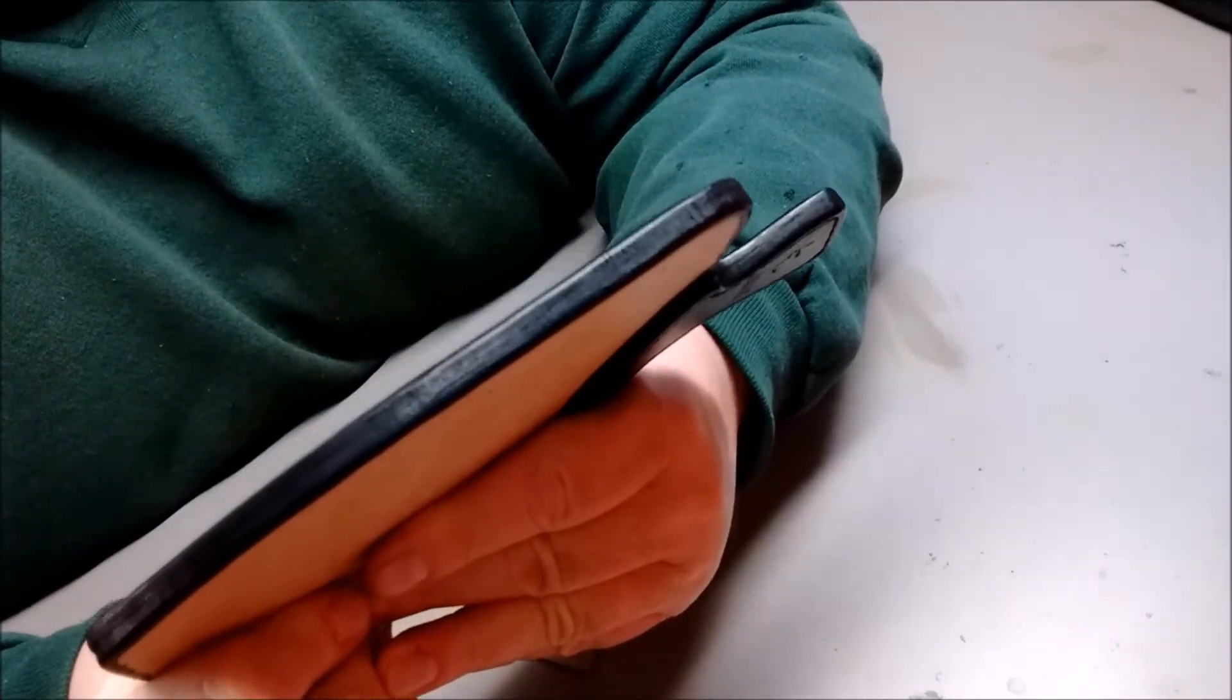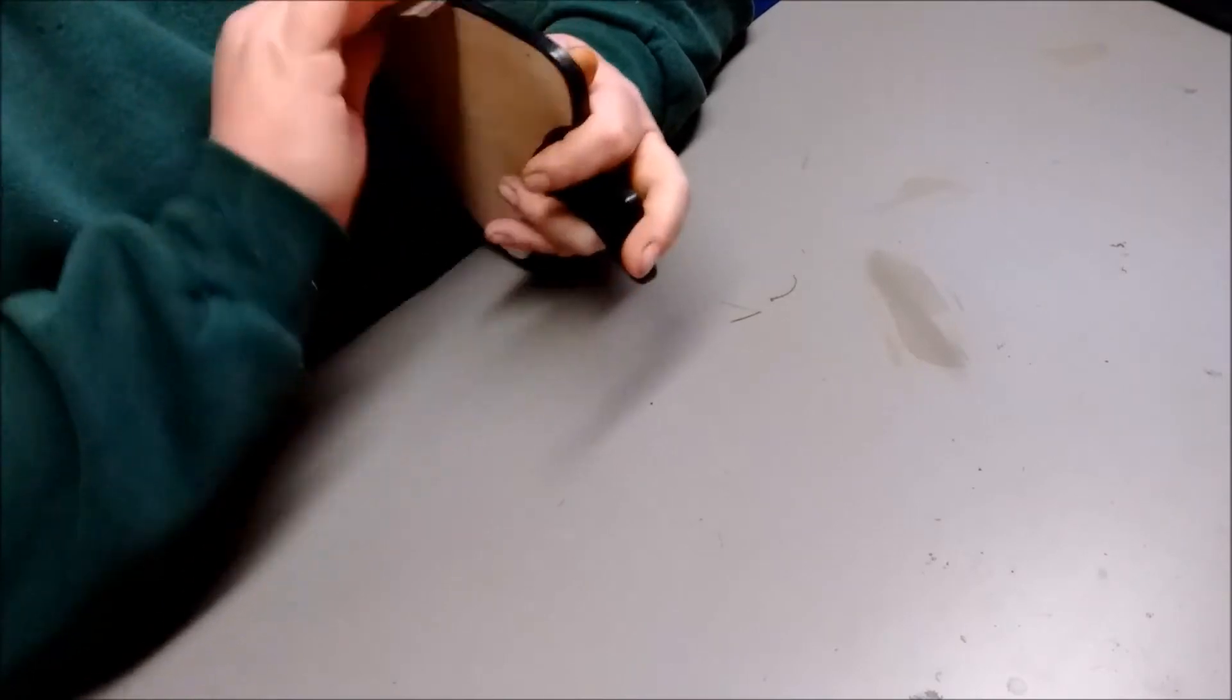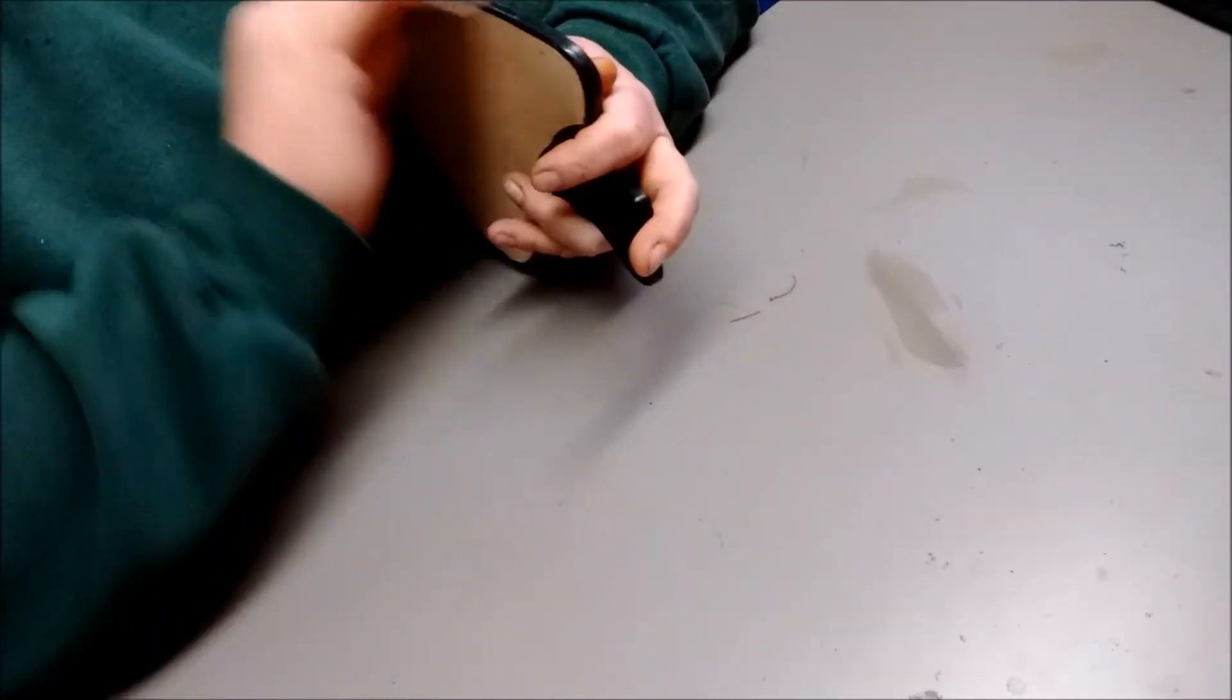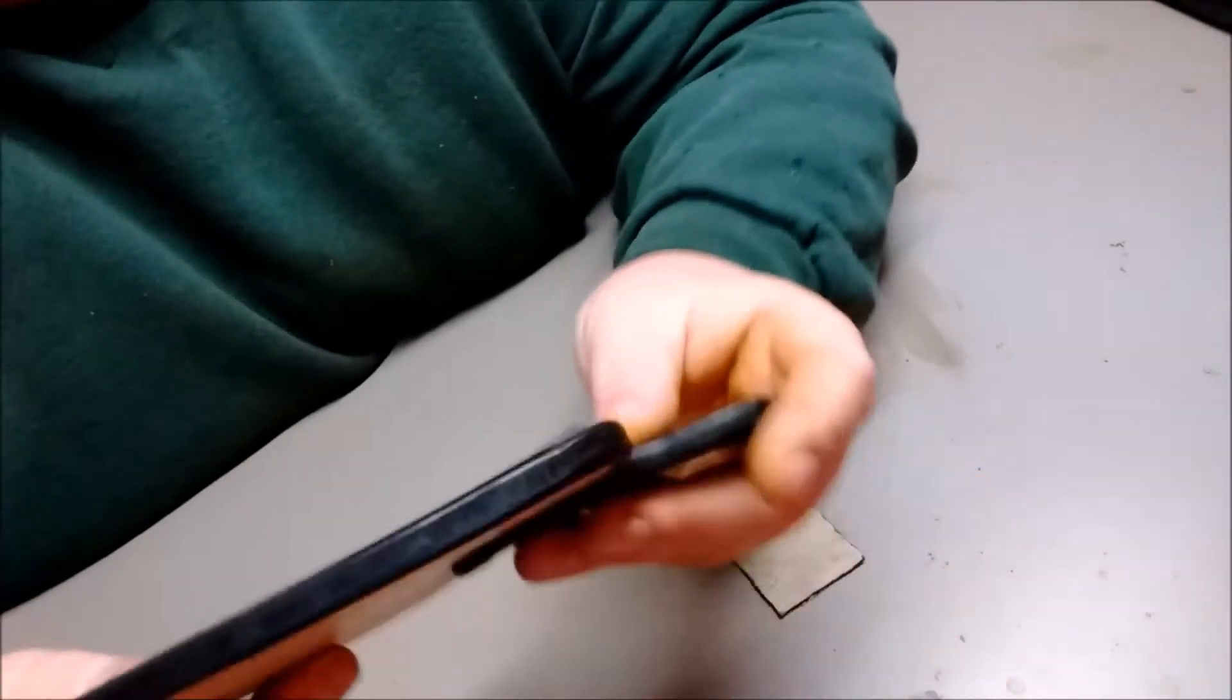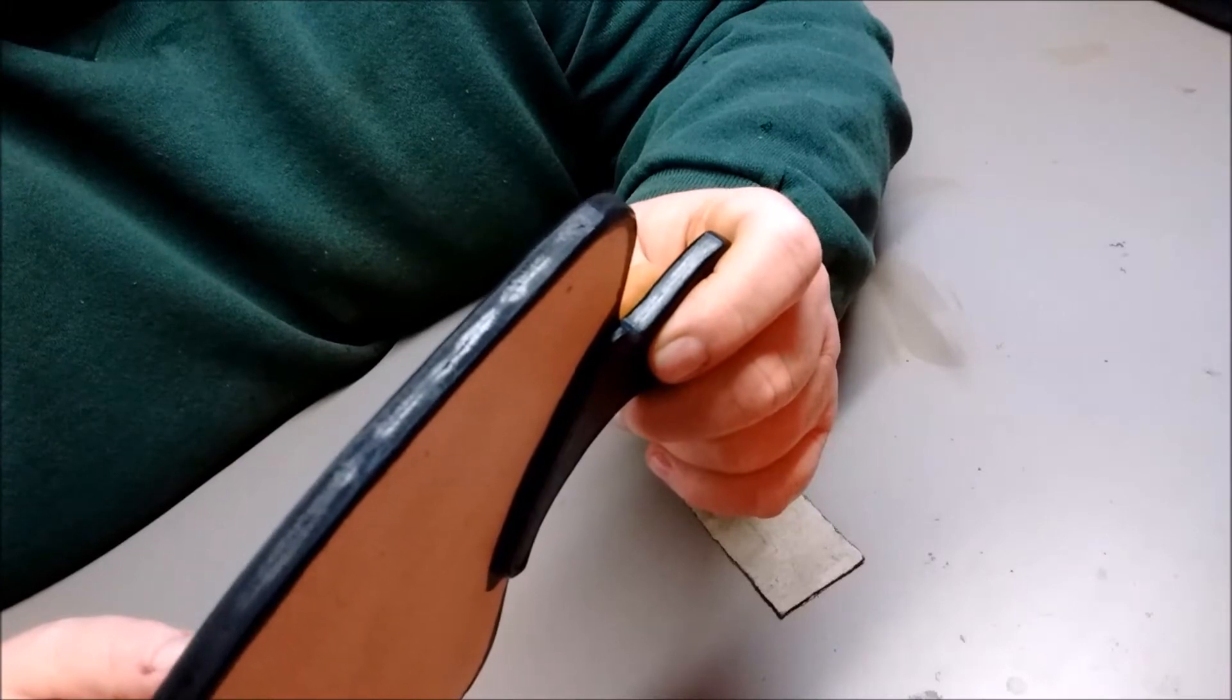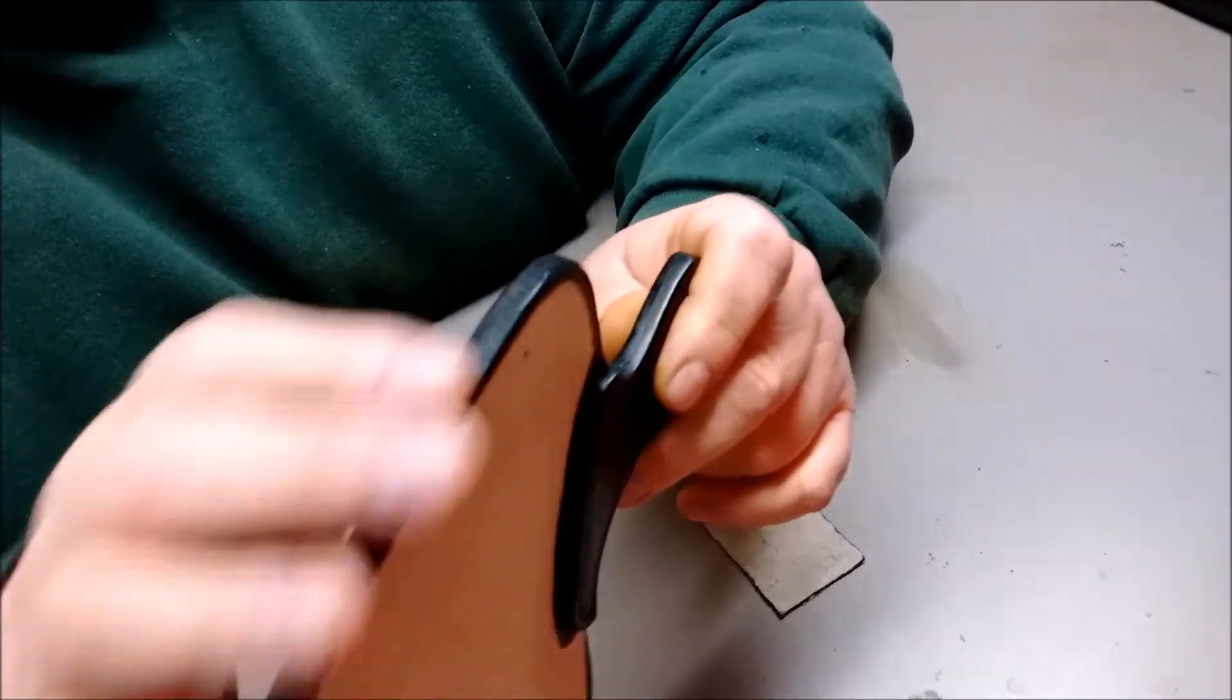But you can kinda see how imperfect it is. And as you sand, I don't know if you can tell or not, you should be able to tell where the sandpaper hit. The high spots. And the low spots are where it didn't hit. So you kinda gotta get the two to match up.